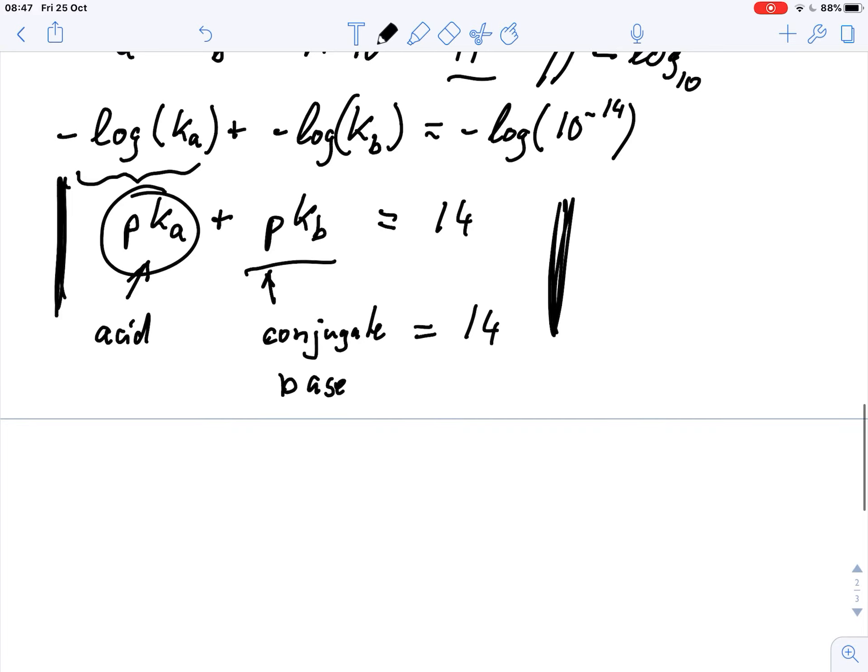So that also explains why we have pH of a solution plus the pOH of a solution always adds up to 14. And that is where this magic number of 14 comes from.